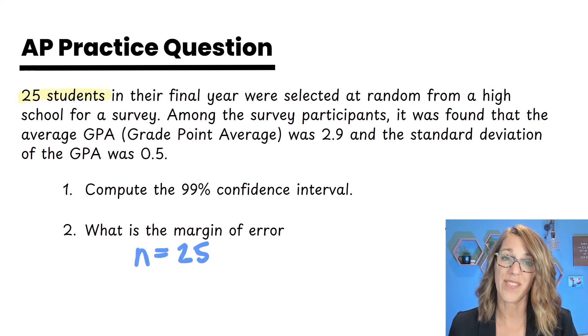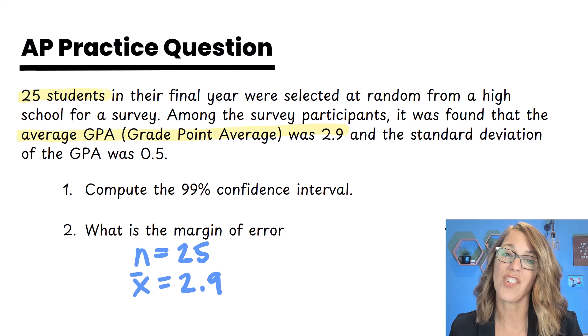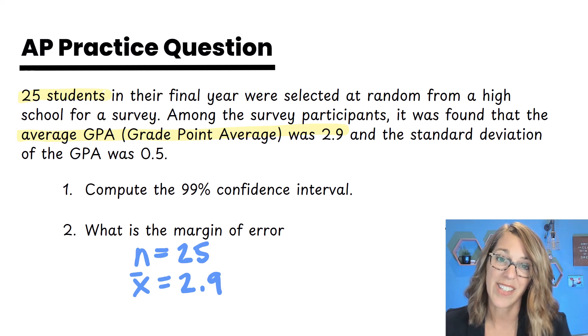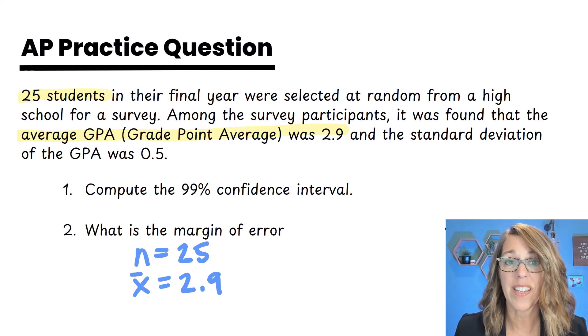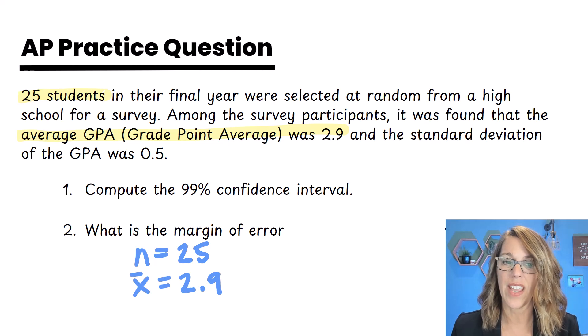I've got 25 students. This is our N. Continuing to read, in that survey of participants we had an average GPA of 2.9. That's X bar, our sample mean. And we had a standard deviation, a standard deviation of those surveyed of 0.5.